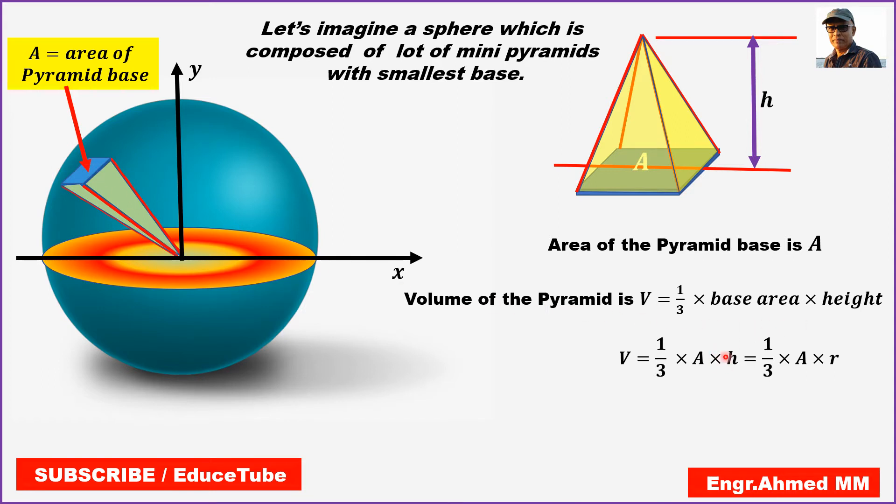So surely here I wrote h, then I replaced it by r. So one-third Ar is the volume of the pyramid.